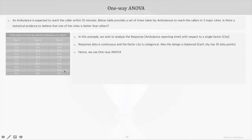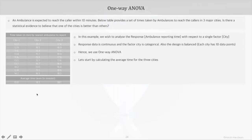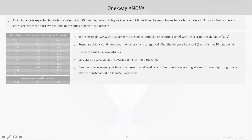In ANOVA, the first thing we do is state our hypothesis. To form our hypothesis, we need the basic stats — the mean of each city's response time. If we look at the average response time, it appears that city one has the lowest response time. So we can say that statistically, at least one of the cities is operating at a much lower reporting time and may be benchmarked. This will become our alternate hypothesis.